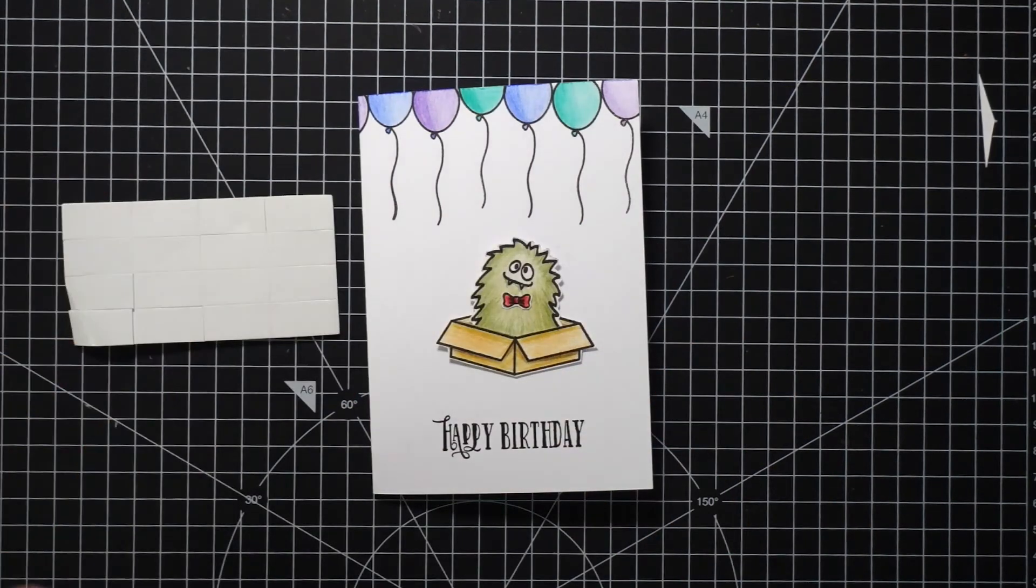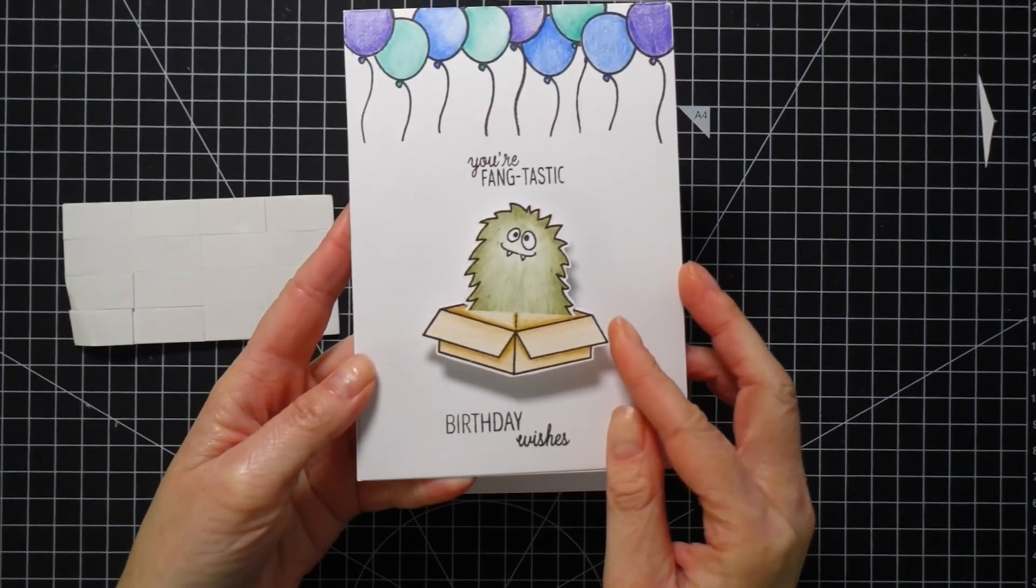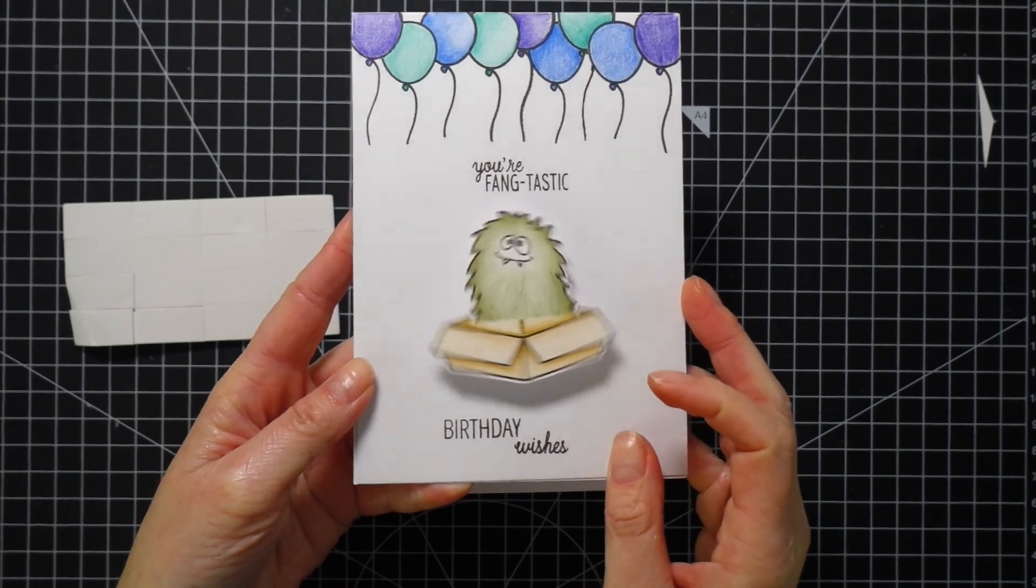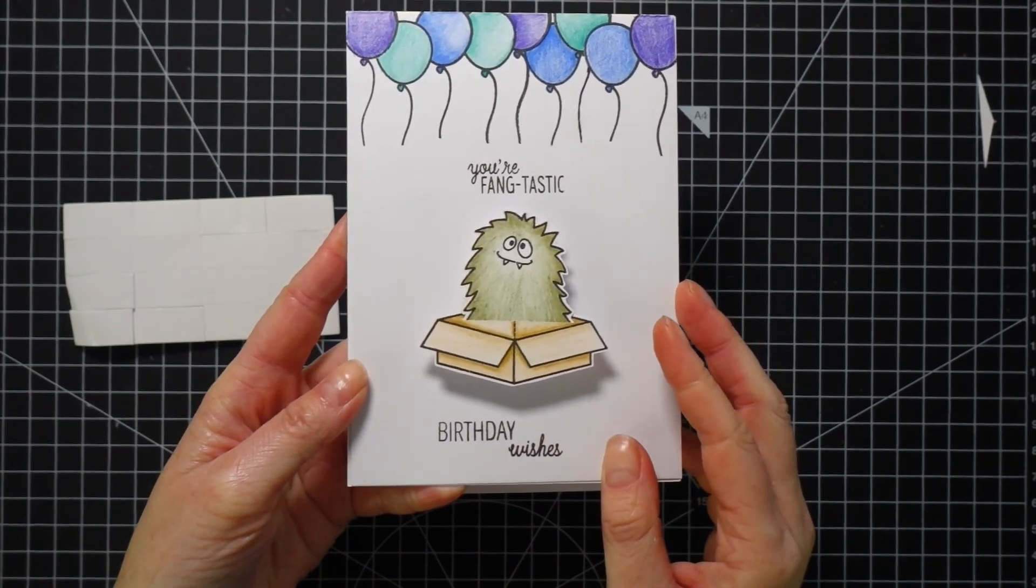What you can also do to make the card more fun is to use action wobblers instead of the foam tape. I did this on a card that I made for my husband and it's really fun when the monster is wobbling.